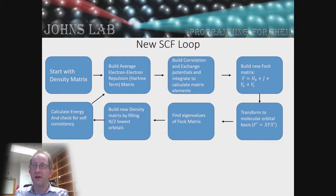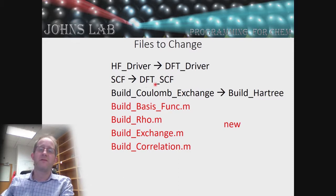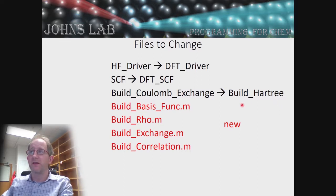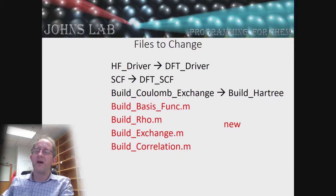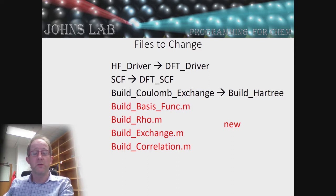On a practical level, the files in black need only minor changes: we rename hf_driver to dft_driver, update the SCF to a DFT SCF, change build_coulomb_exchange to build_Hartree (only computing electrostatic repulsion). New routines needed include: building basis functions on a grid, building the density at grid points x, y, z from the density matrix, building the exchange potential, building the correlation potential, and evaluating the exchange-correlation energy. Stay tuned for the next video where I'll walk through the programming changes so you'll have your own DFT program.